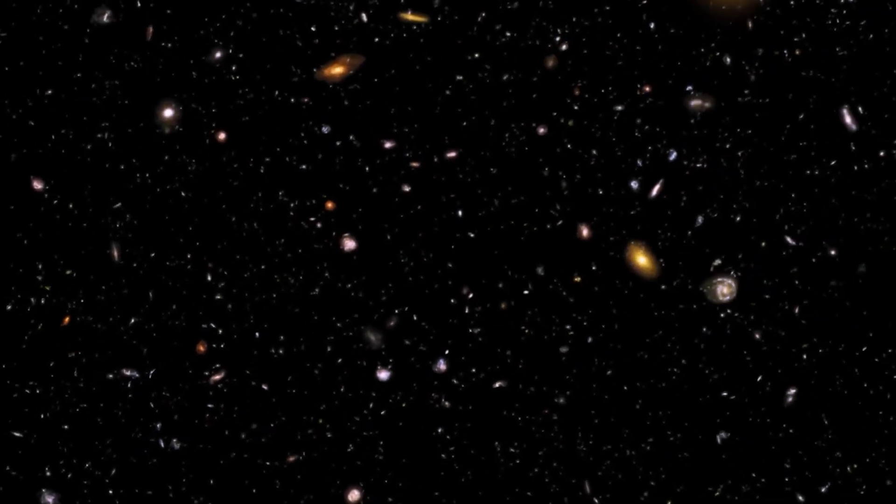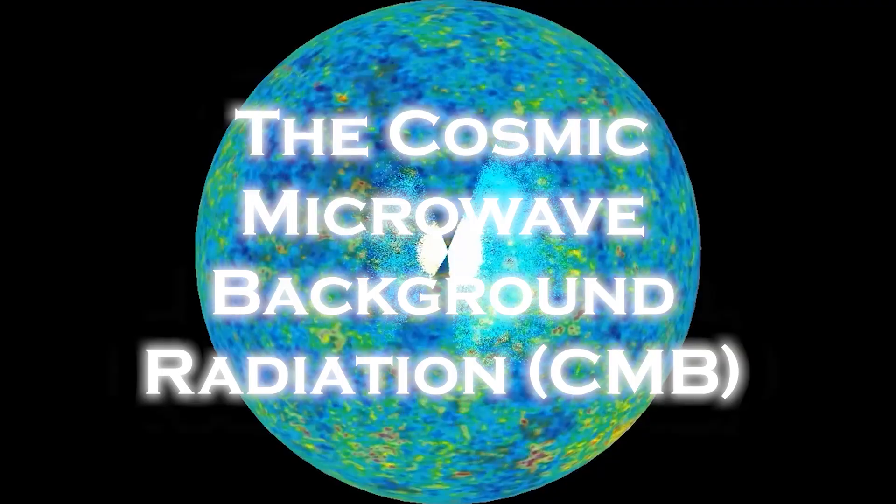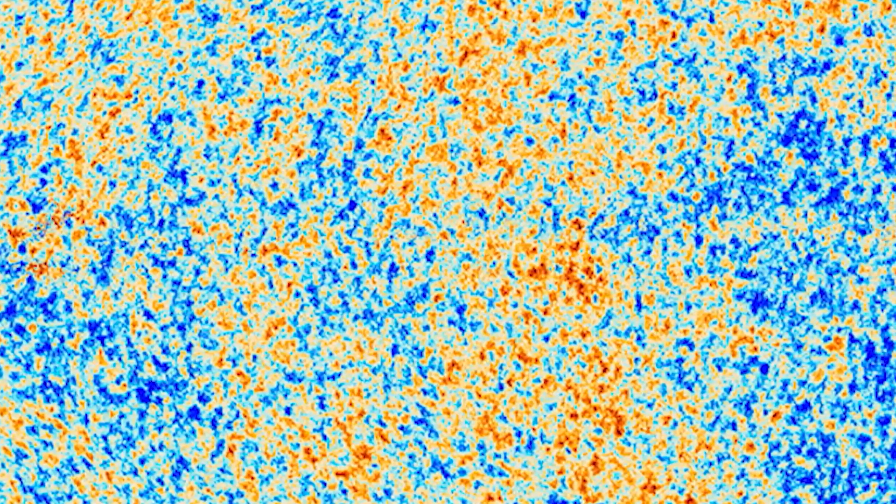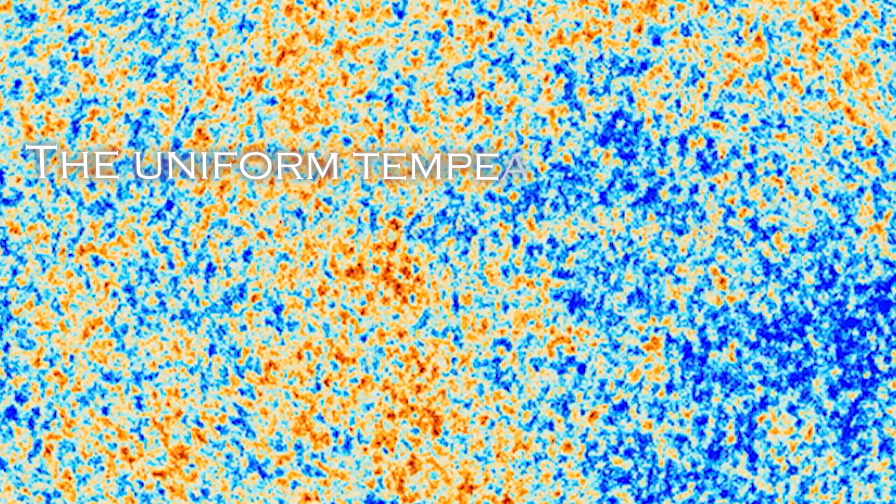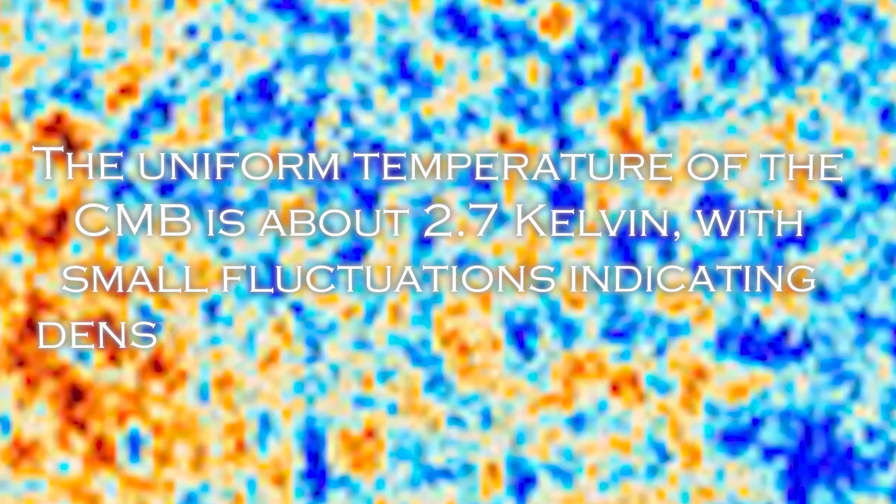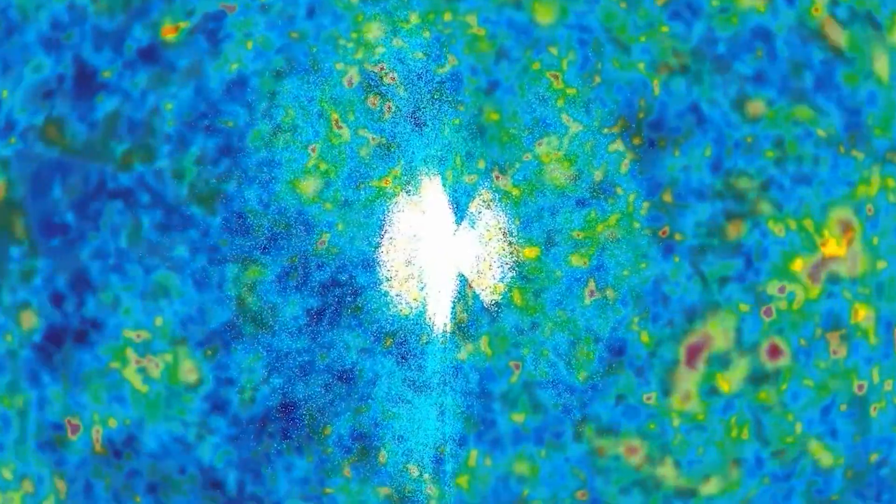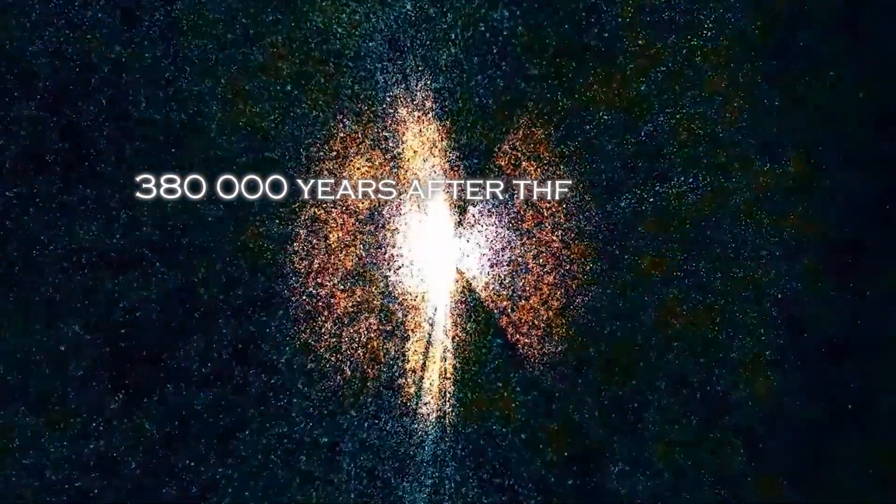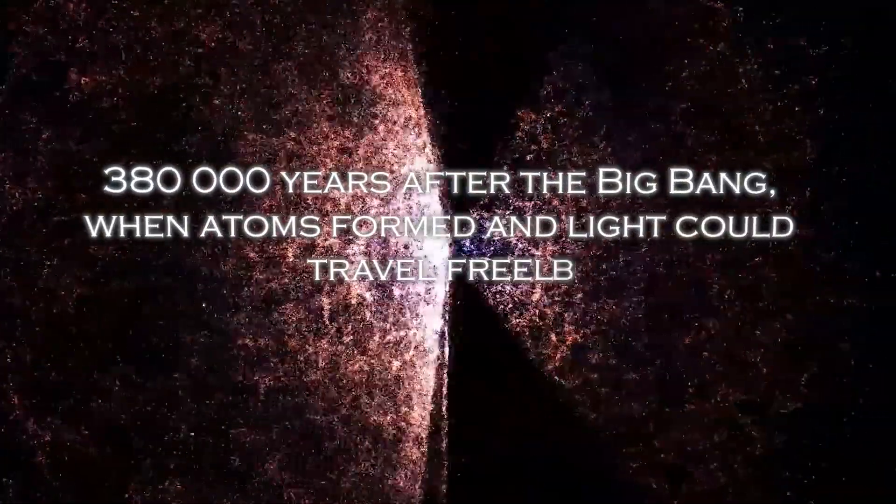The Cosmic Microwave Background Radiation is a faint radiation that fills the entire sky and is a remnant of the intense heat and light of the early universe. The uniform temperature of the CMB is about 2.7 Kelvin, with small fluctuations indicating density variations in the plasma. The CMB also shows that the universe was opaque to light until about 380,000 years after the Big Bang, when atoms formed and light could travel freely.